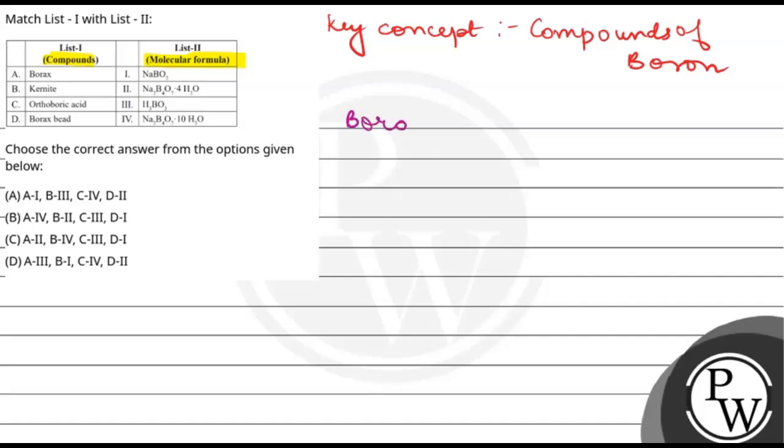First we have borax. So borax molecular formula is Na2B4O7·10H2O. That means A option is 4.